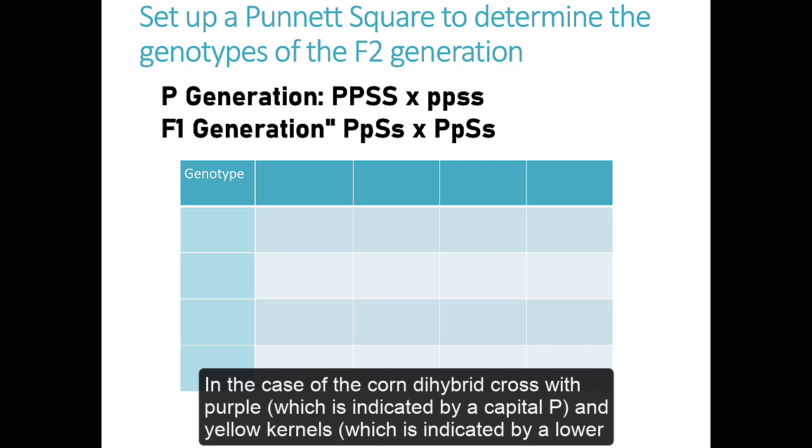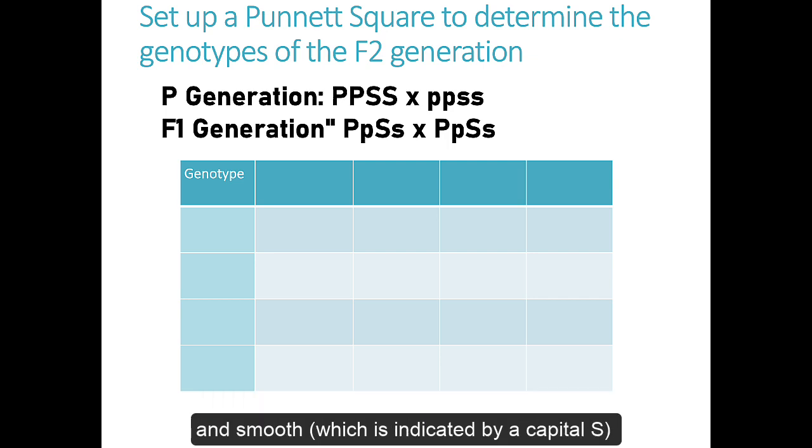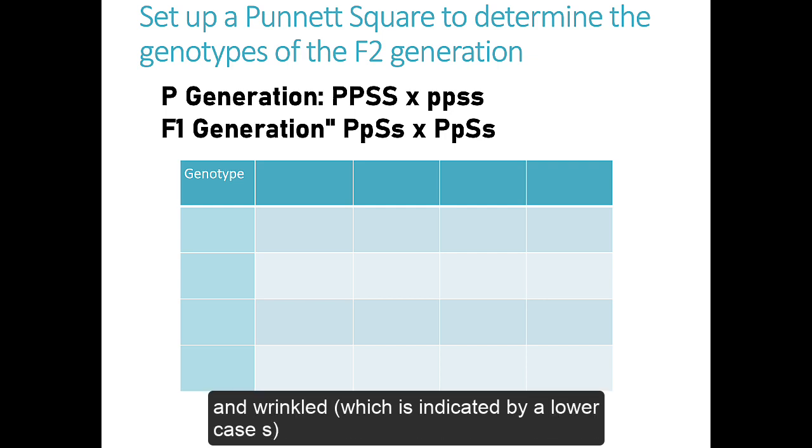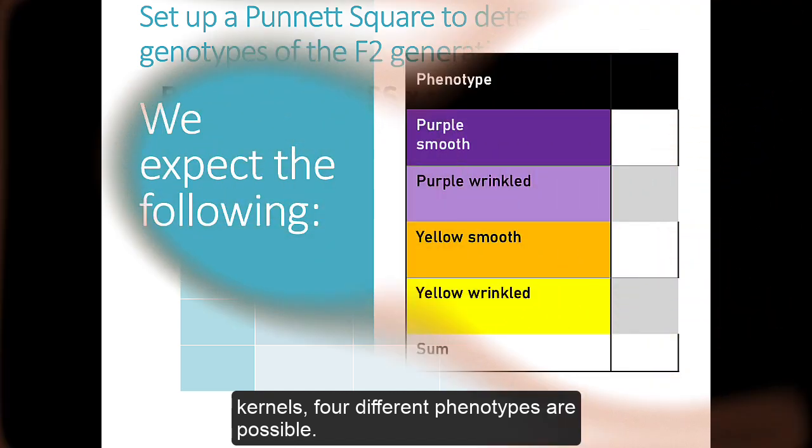In the case of the corn dihybrid cross with purple, which is indicated by a capital P, and yellow kernels, which is indicated by a lower case p, and smooth, which is indicated by a capital S, and wrinkled, which is indicated by a lower case s, kernels, four different phenotypes are possible.